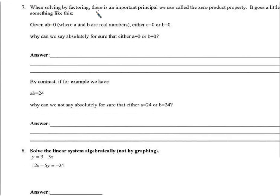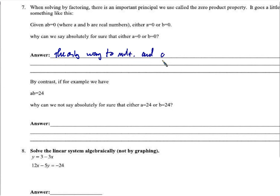When solving by factoring there's an important principle: the zero product property. It goes like this — A times B equals 0, where A and B are numbers. Either A equals 0 or B equals 0. The only way to multiply and get a product of 0 is to multiply by 0.